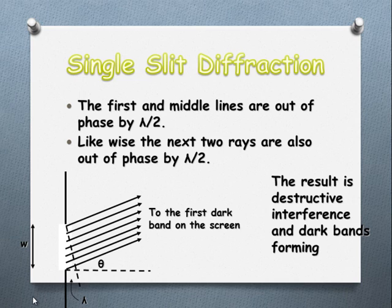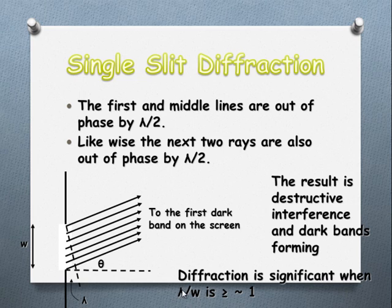What's important for any significant diffraction to occur is that the wavelength must be proportional to the slit width. Light passing through a doorway is not going to cause diffraction where we'd see an interference pattern. We need a very narrow slit width somewhere down in a similar region to that of the wavelength.